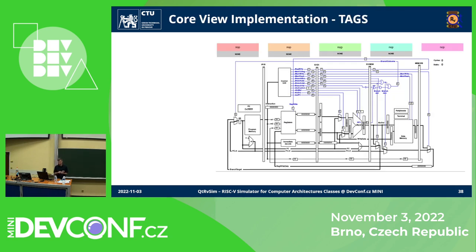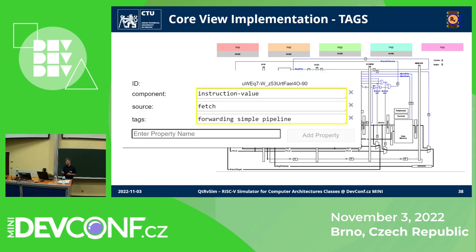Finally, the visualization. Some simulators take the approach of generating it from the description of the core. However, we think it's best to draw it manually to draw attention to the most important parts. Previously we used hard-coded Qt objects, but that was tedious to maintain. So this visualization is in fact an SVG file tagged with special text that corresponds to the state of the pipeline.